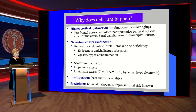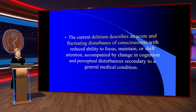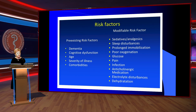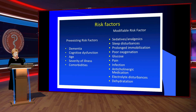The current definition describes delirium as acute and fluctuating disturbances of consciousness with reduced ability to focus, maintain, or shift attention, accompanied by changes in cognition and perceptive disturbances secondary to a general medical condition. Pre-existing risk factors include dementia, age, severity of illness, and comorbidity. Additional factors include glucose levels, pain, infection, anticholinergic medication, dehydration, sedatives, and analgesic drugs.